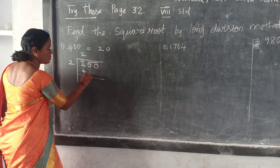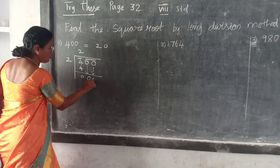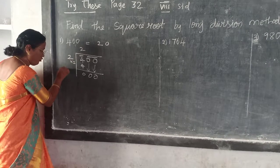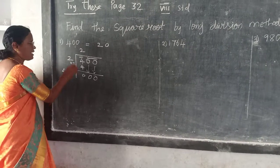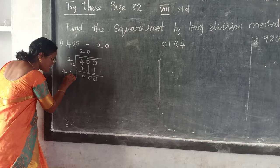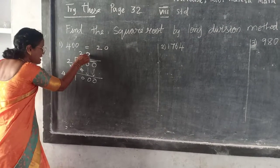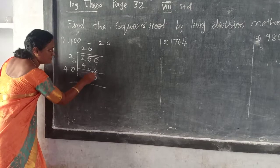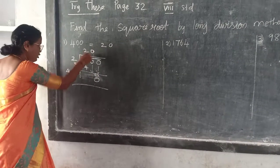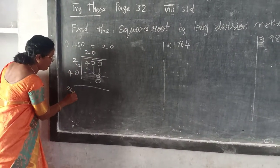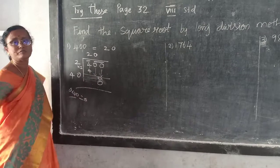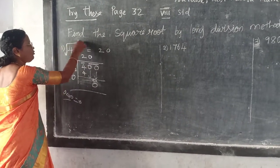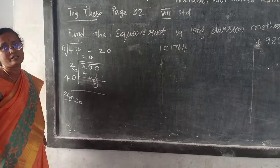Remainder: 0. So you have to bring down these 2 zeros — that means 2 2's are 4. You get 0, then 0 into 40 gives 0. So the answer: root of 400 is equal to 20.